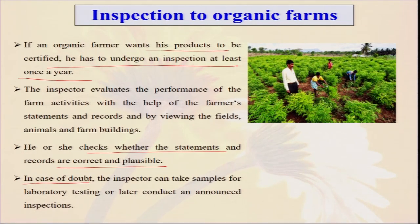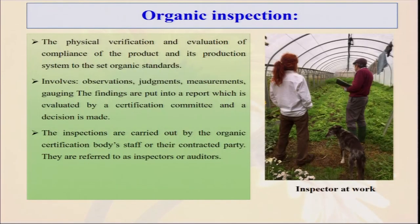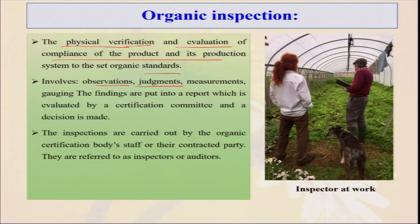In case of doubt, the inspector can take samples — soil samples, water samples, and plant or food produce samples — and send them to an accredited laboratory for testing. There are many accredited laboratories in India. They can test for pesticide residue presence. If residue is found, the farm will not get certification. Organic inspection is a physical verification — an evaluation involving observation, judgment, measurement, and laboratory testing. The findings are put into a report which is evaluated by a certification committee, and the decision is made.